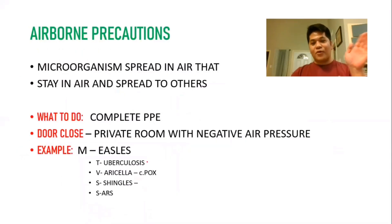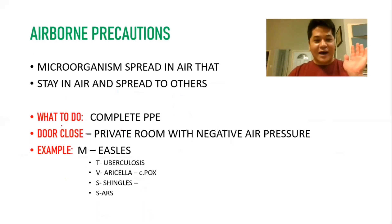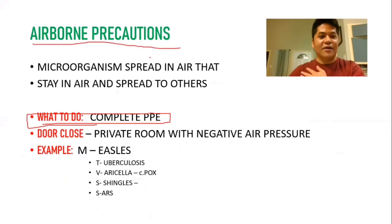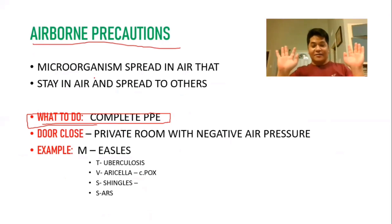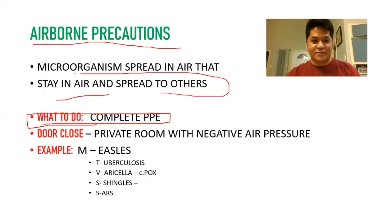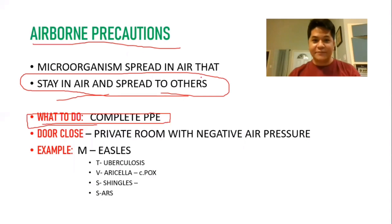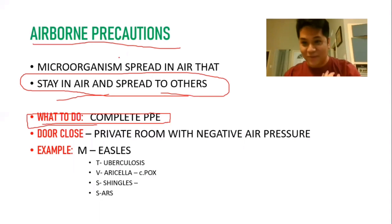Moving on to airborne precautions — airborne is the worst one, so you need the complete PPE, all five items. Airborne microorganisms spread through the air and remain in the air, making them easy to transmit. Unlike droplets, which stay in the air only briefly then fall and become non-communicable, airborne particles remain suspended and can spread to others.